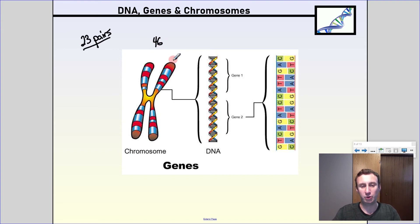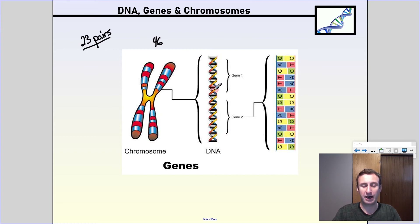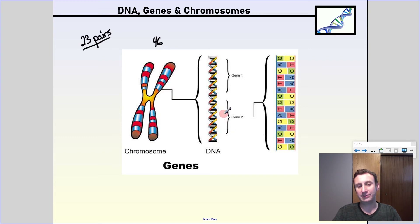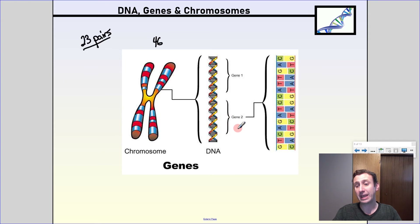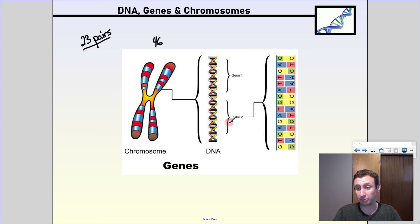All together, this is packaged into chromosomes of which you have 46 — 23 pairs. A section of DNA that makes a protein is called a gene, and you actually have two genes for everything: one gene that comes from your dad for each trait and one gene that comes from your mom.